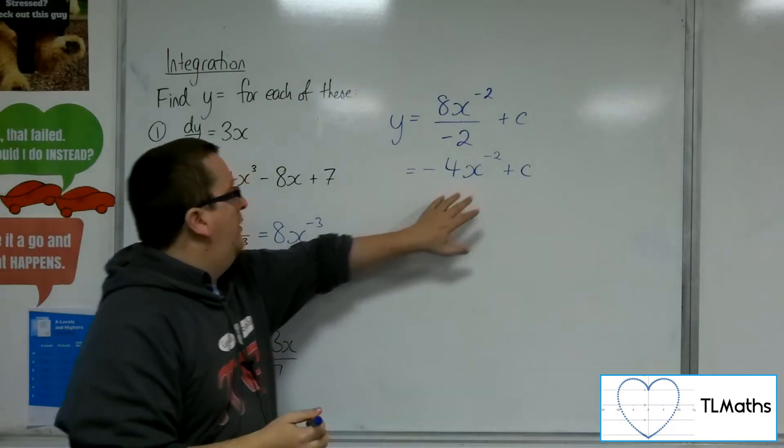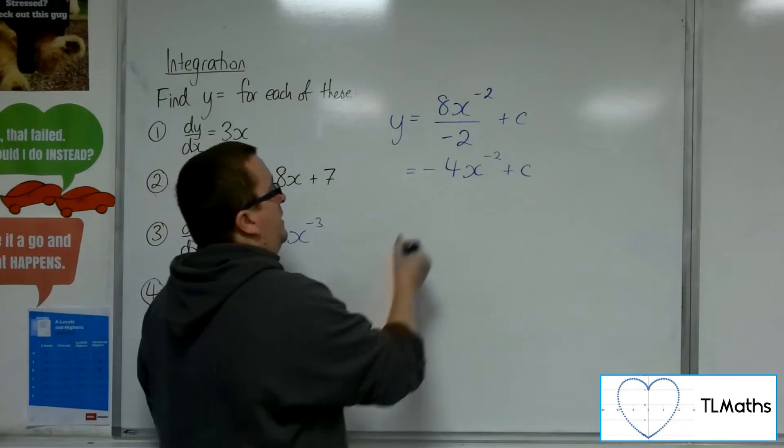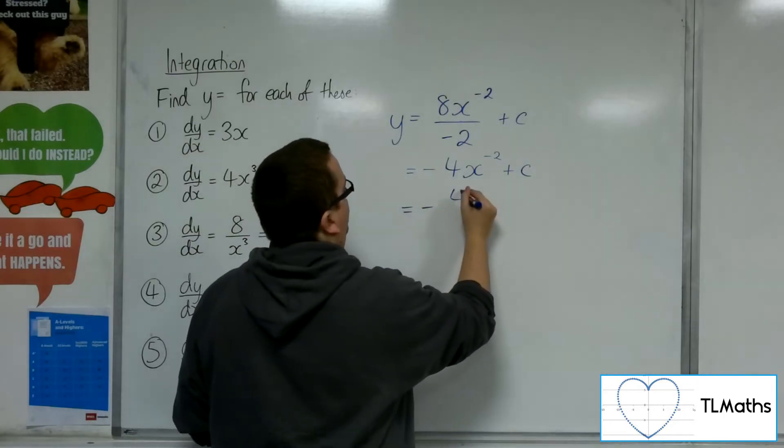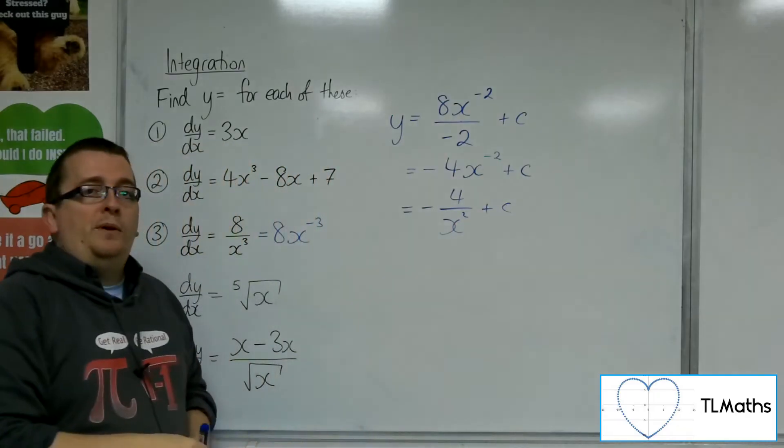So, that is the general solution for the minus 4 over x squared plus c. Either of these two formats is perfectly fine.